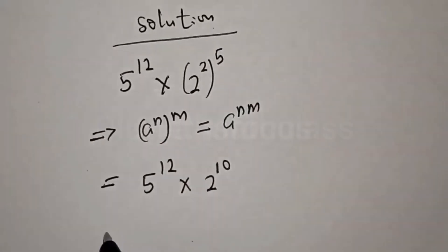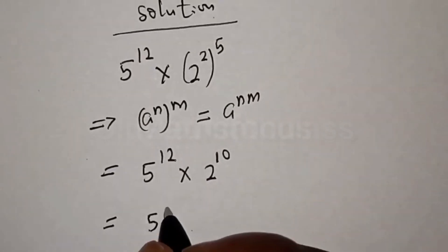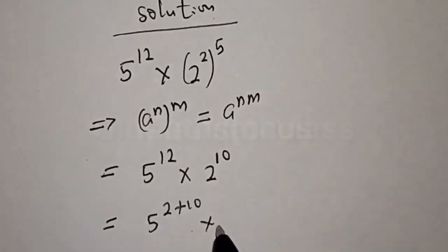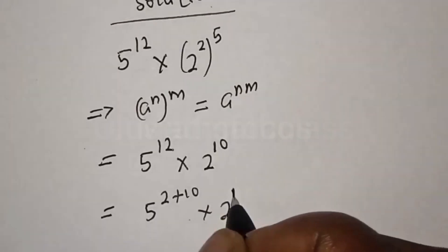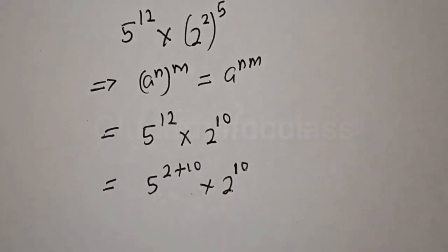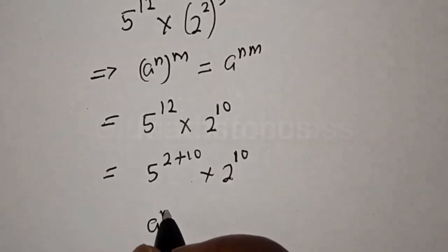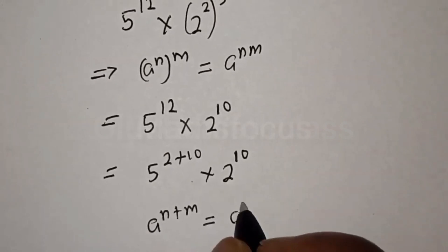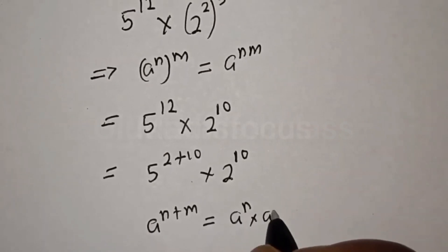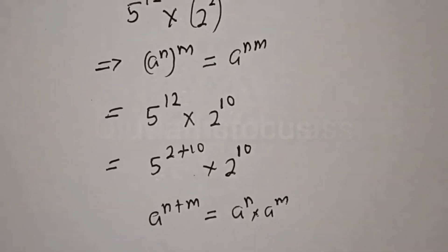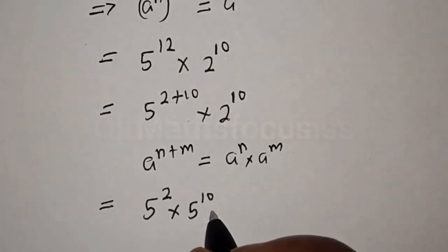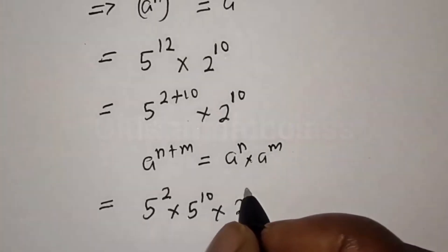Then 5 raised to power 12 can be written as 5 raised to power 2 plus 10, multiplied by 2 raised to power 10. Now take note of this rule: a raised to power n plus m is equal to a raised to power n multiplied by a raised to power m. This gives us 5 raised to power 2 multiplied by 5 raised to power 10 multiplied by 2 raised to power 10.